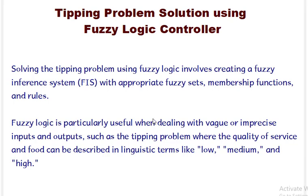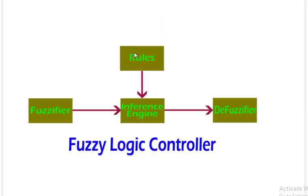The tipping problem is a simple example of this. Tipping refers to the tip we give to waiters when we go to a restaurant. That tip is based on the quality of service and the food — quality may be low, medium, or high, and food quality can also be high or low. Based on that, we give the tip.